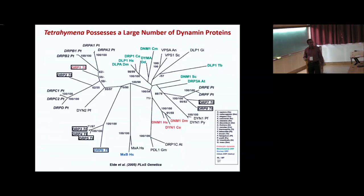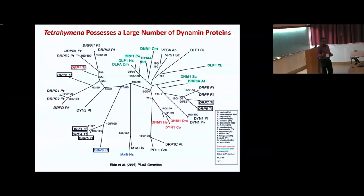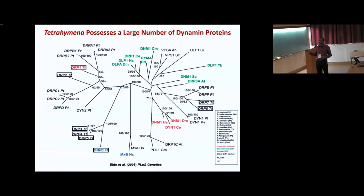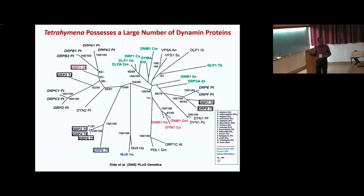Out of these eight dynamin-related proteins, two have endocytic roles; DRP7 and DRP8 localize to mitochondria. However, DRP3 to DRP6 — four dynamins — have no homolog in other organisms; they appear to be a Tetrahymena-specific clade with possibly lineage-specific roles. One of these four, DRP6, when GFP-tagged, goes to the nucleus — specifically to the nuclear envelope as well as some cytoplasmic puncta.